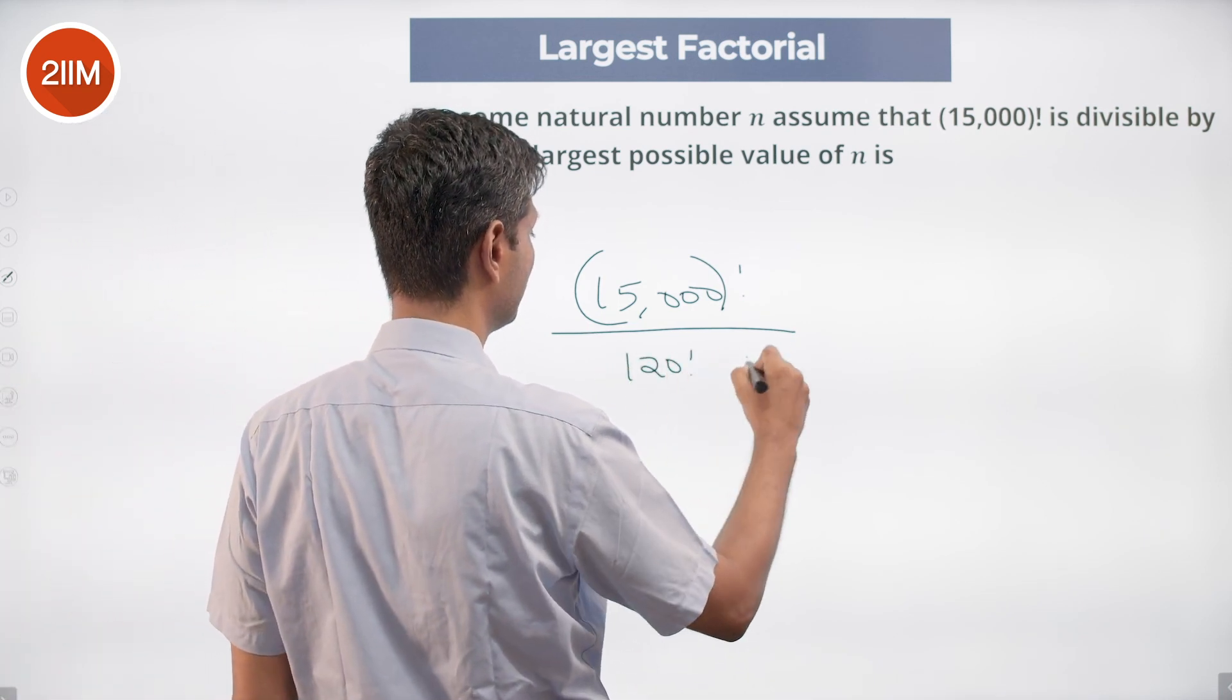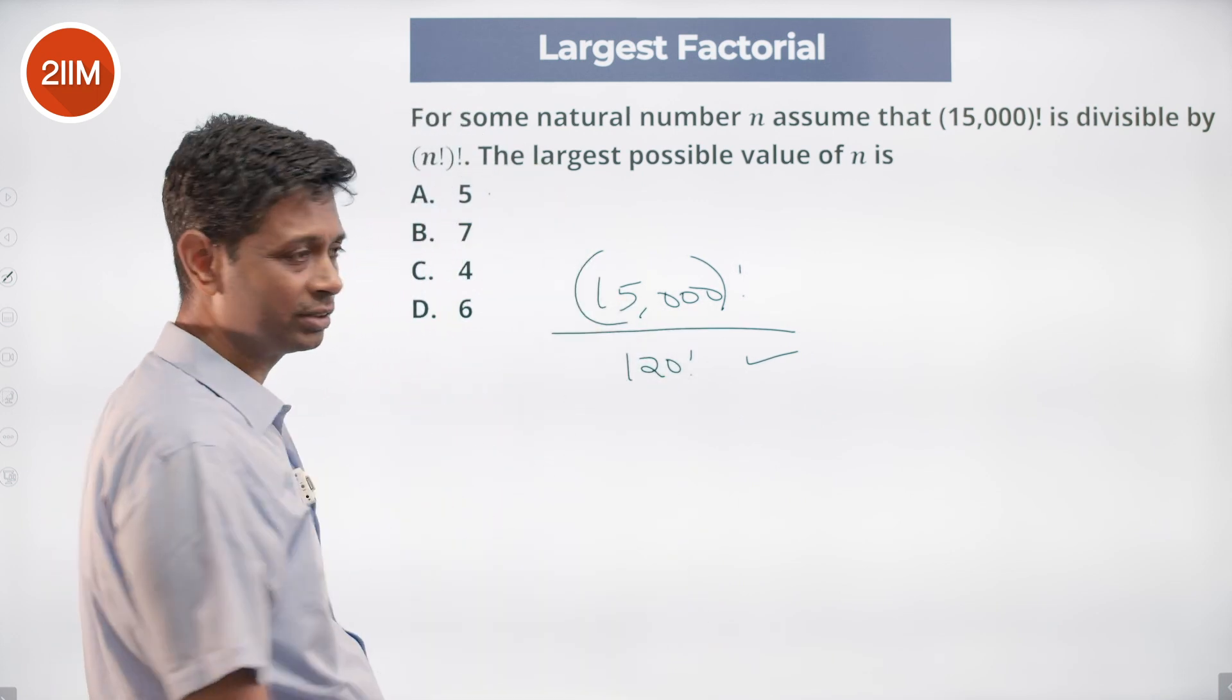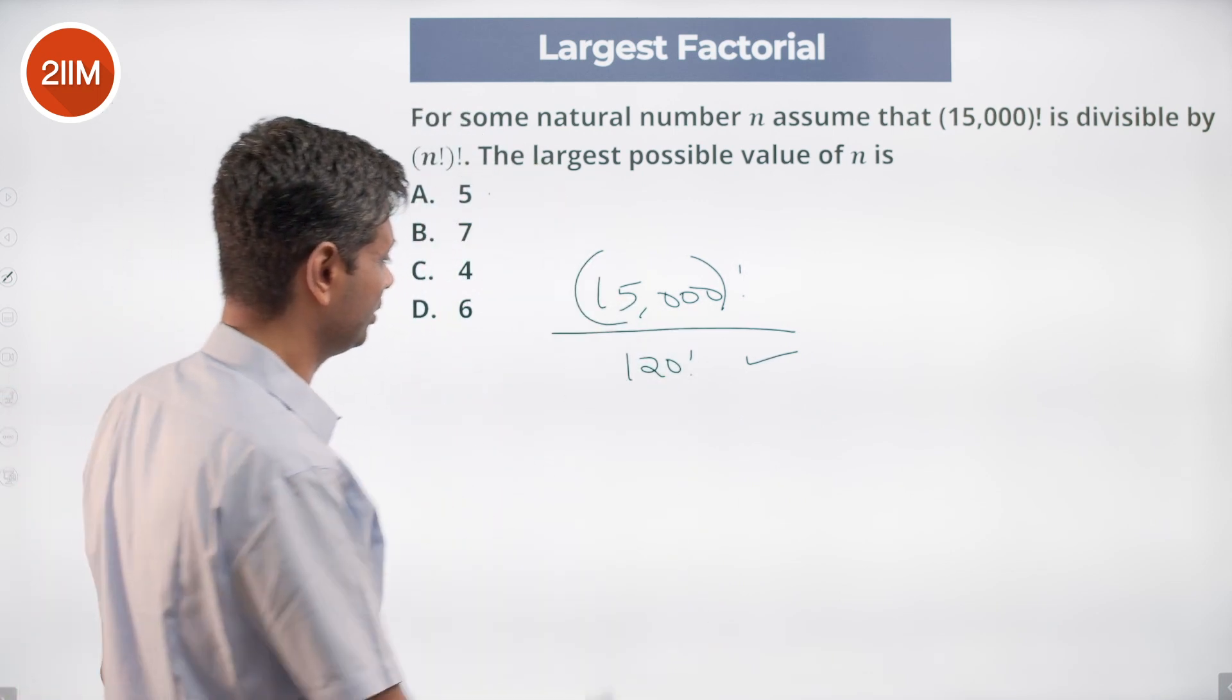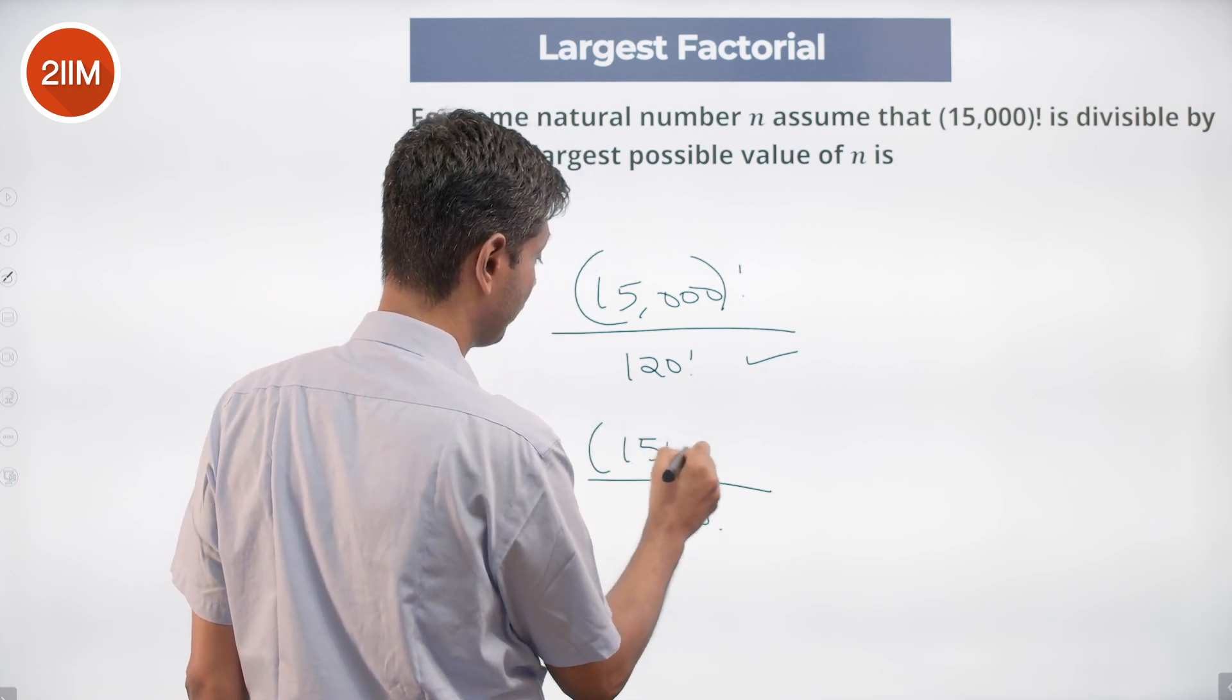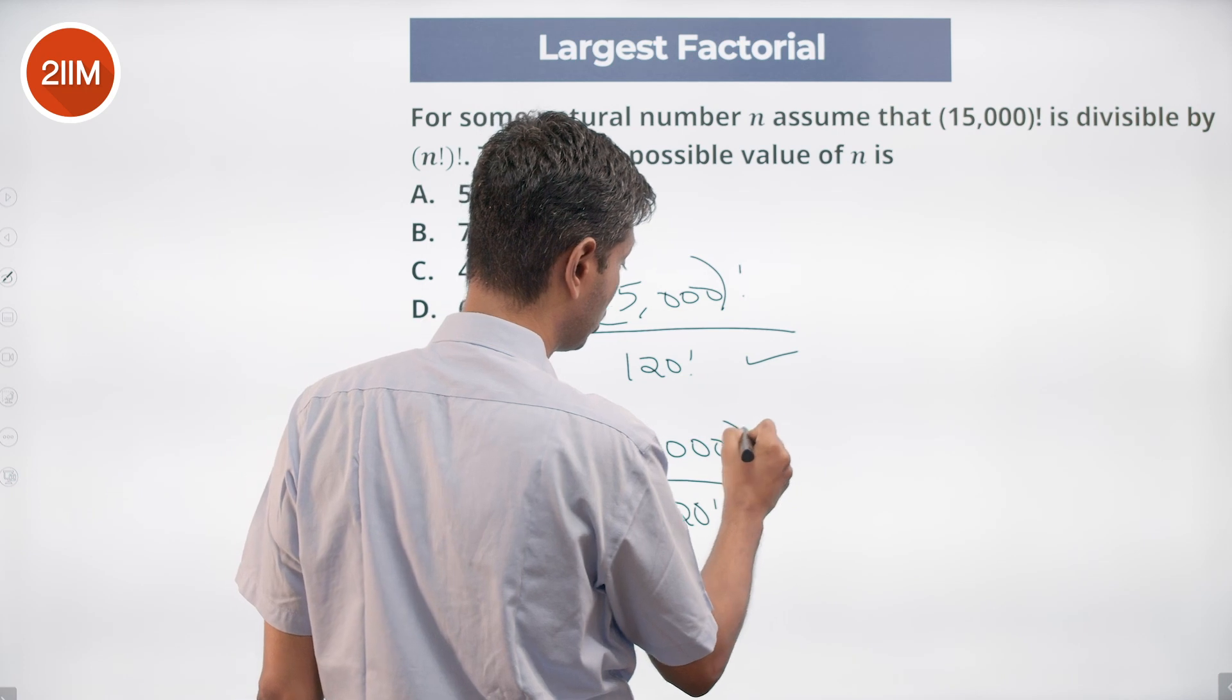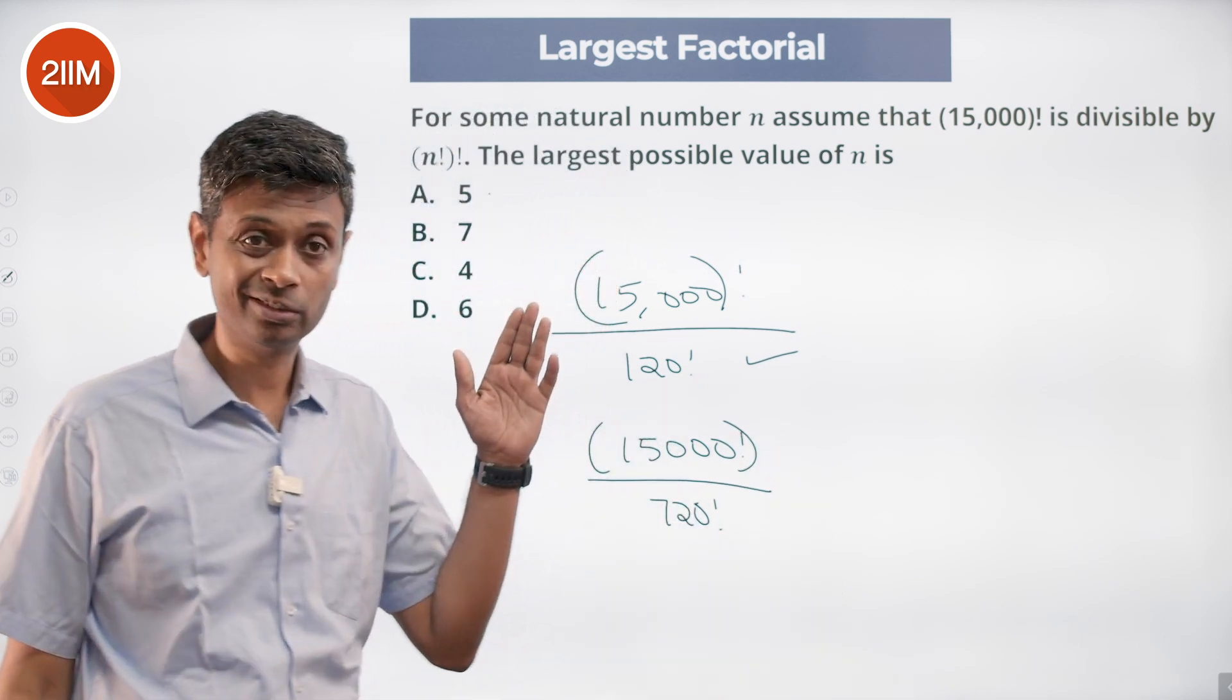Put 6 factorial - that means 120 into 6, 720 factorial. This works. This is 15,000 factorial: 1 into 2 into 3 into 4, all the way till 15,000. 1 into 2 into 3 into 4 at 720. 6 is also possible.